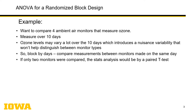We want to compare four ambient air monitors that all measure ozone. Some are old, some are new — you want to make sure they all measure the same thing, or maybe the newer one is more accurate. You know you'll have to do this over multiple days, but the ozone levels themselves are going to vary a lot over those 10 days. So you want to tweak out the differences between the monitors. The factor is monitor, with four levels: monitor A, B, C, and D.